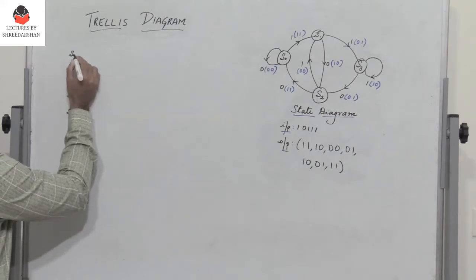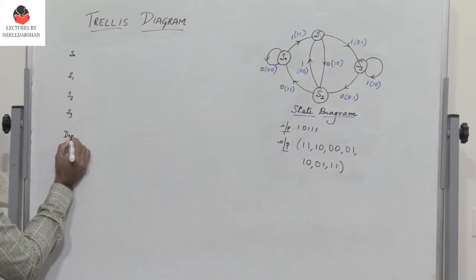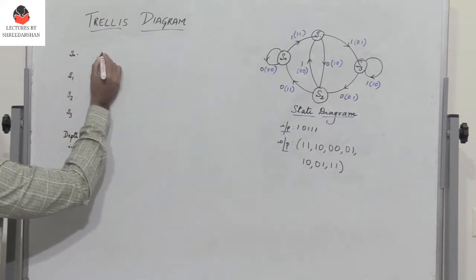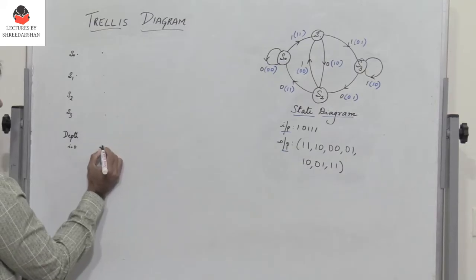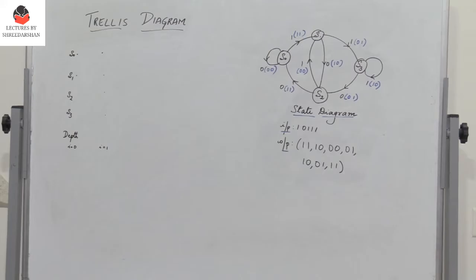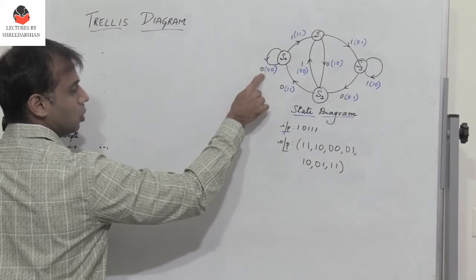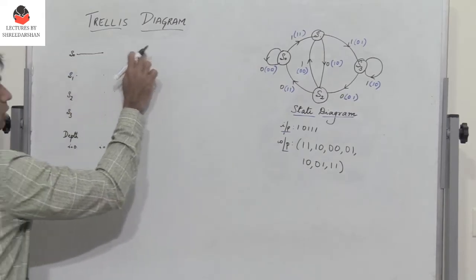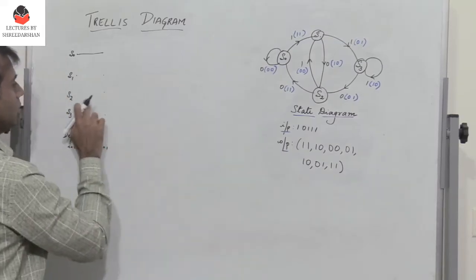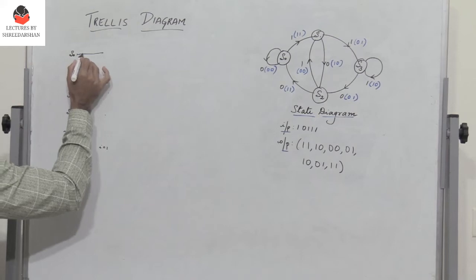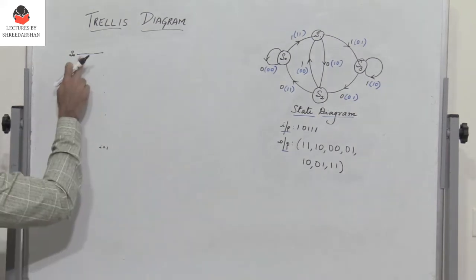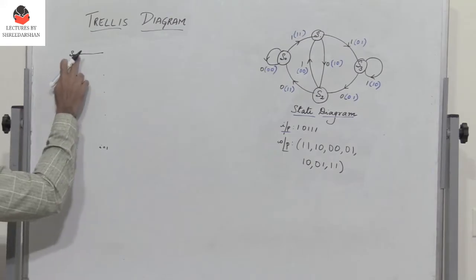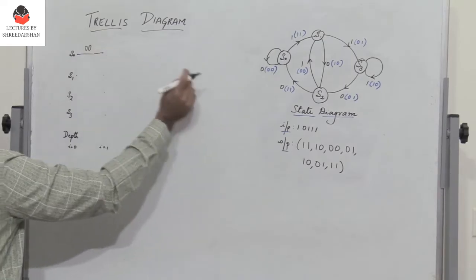This is the initial stage. We call this depth i equal to 0. The next stage is at depth i equal to 1. If I am in state s0 and the input is 0, I remain at s0. So this is the next state — I go to s0 itself. The horizontal lines represent s0, s1, s2, and s3 respectively. If I have a solid line, it indicates that the input is 0. And if I have a dashed line, it indicates that the input is 1. So input is 0 and the output is 0,0.